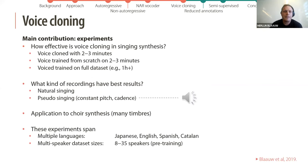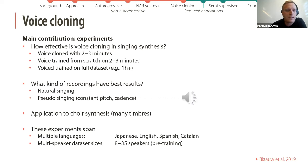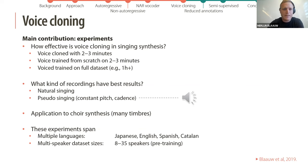The main contribution is in the different experiments we conducted: comparing voice clones with two to three minutes of data, voices trained from scratch on two to three minutes of data, and voices trained on a full dataset of more than one hour. We also compared recording types — natural singing versus pseudo-singing, which is singing at a constant pitch and cadence as a kind of in-between singing and speech.